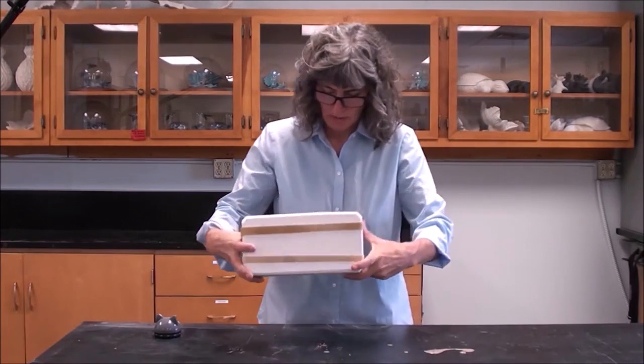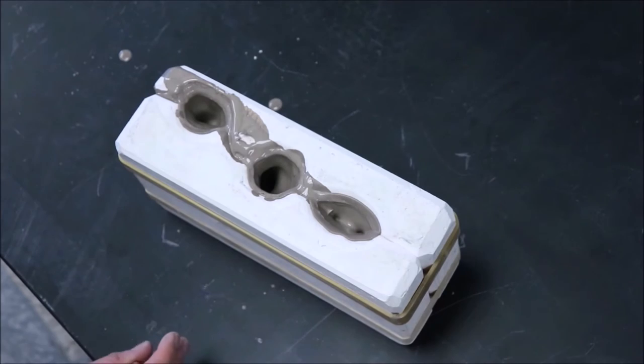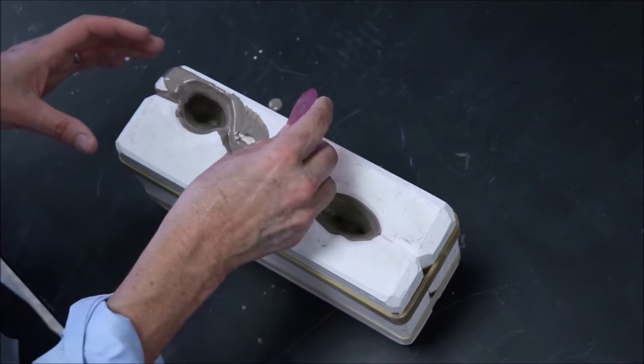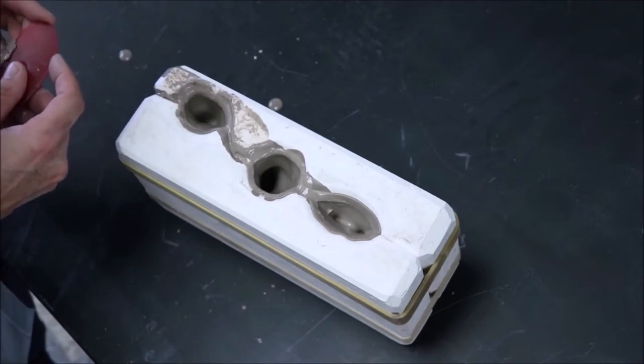Then I turn it right side up to aid in the drying process. At this stage, you should remove excess slip from the top of the mold. If you do not do this, sometimes it causes the piece inside to crack.